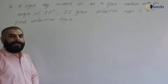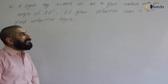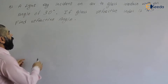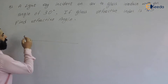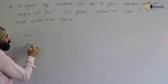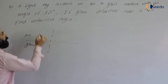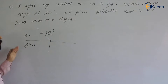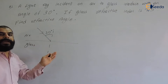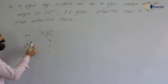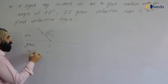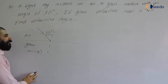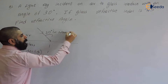I have written a numerical — a light ray is incident on an air-to-glass interface with an angle of 30 degrees. So this is air, this is glass, and the light is incident on the air-to-glass interface at 30 degrees. When light passes from one medium to another it deviates from its path. The refractive index of glass is given as 1.5, and we have to find the angle of refraction.